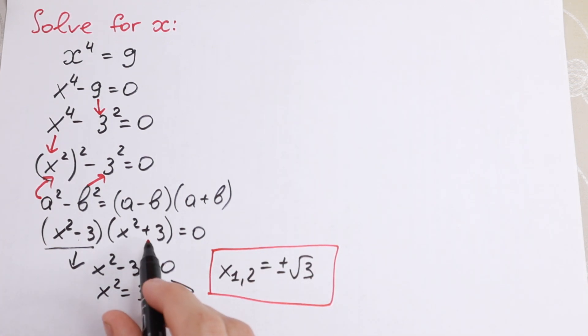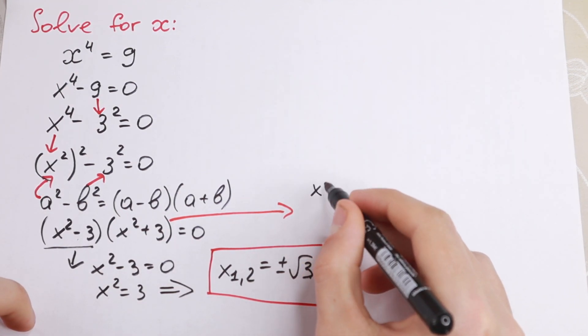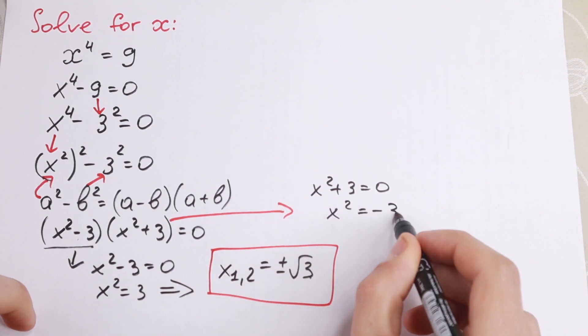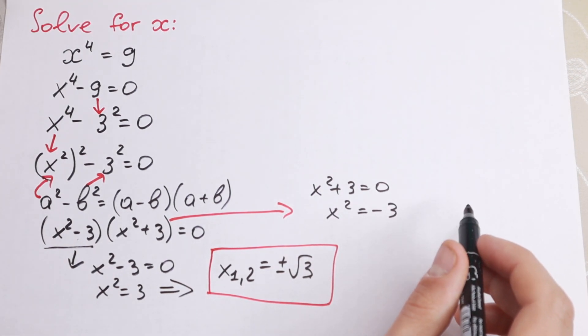And let's go right here to these parentheses. What we will have? We will have that x squared plus 3 equal to 0.